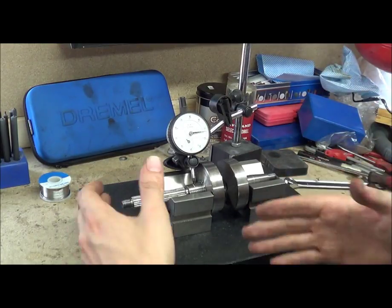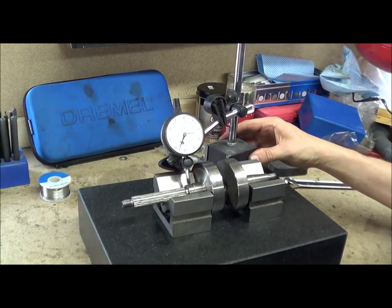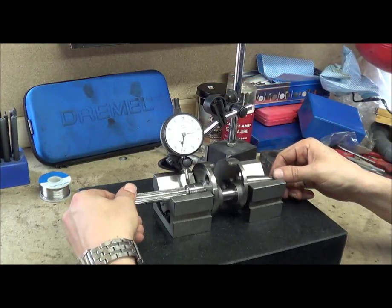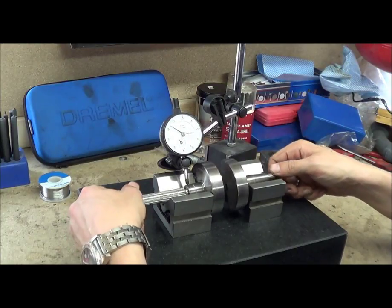And this gives you a good indication of how walked one is to the other. You can move it along and put it on another surface, which is the oil seal surface just afterwards. And you get the same thing.